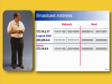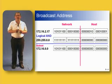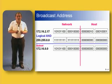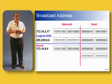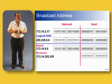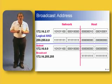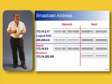Here we have a subnet 172.16.0.0. If we set the host portion to all ones — in other words, the last 16 bits set to all ones — and then include the network portion of the address, you can see that if we convert the two back together, with both the subnet portion and host portion all set to ones, we get a broadcast address of 172.16.255.255. If I send anything to that address, it'll go to every host on network 172.16.0.0.